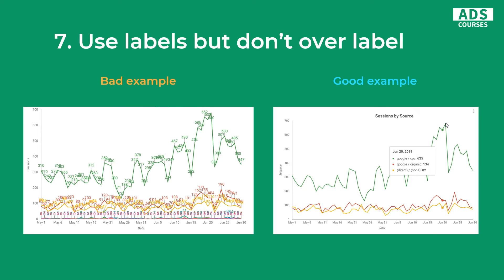Number seven is use labels, but don't over label. You can label data in Google Data Studio, but that doesn't mean that you always should use these labels. In this example on the left, as you can see, the numbers and labels are unreadable. In the good example, we actually don't use labels at all, because in this example it's better not to use them — you still have the option to hover over the chart and see the actual numbers.